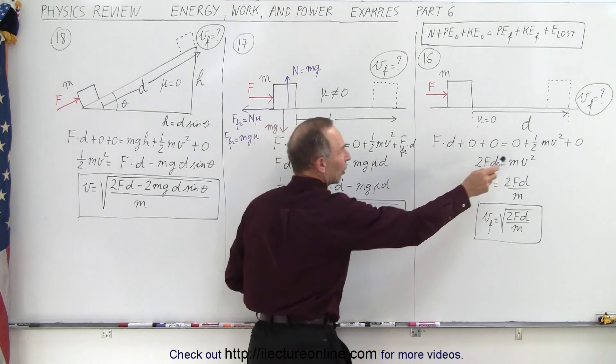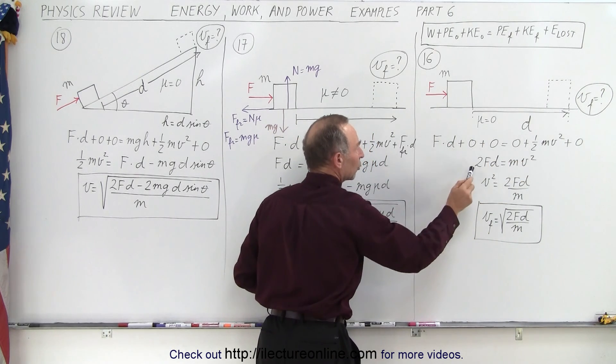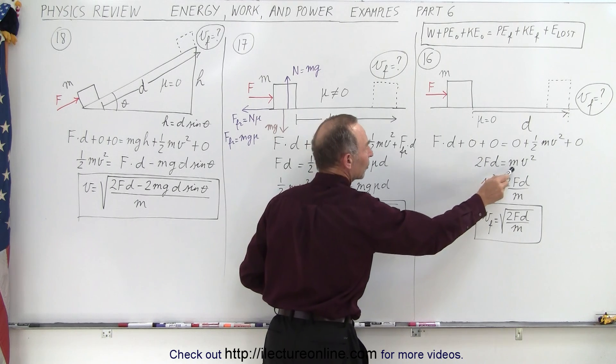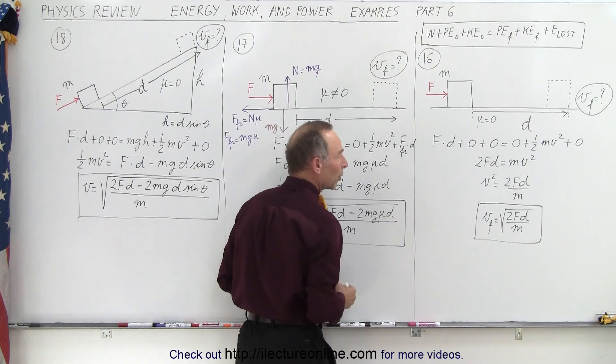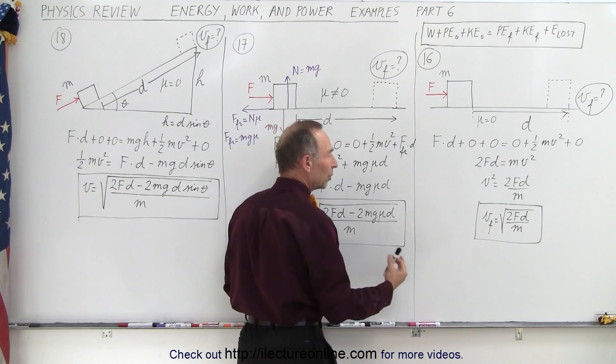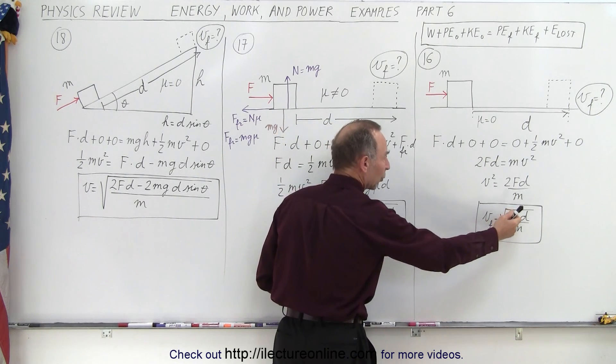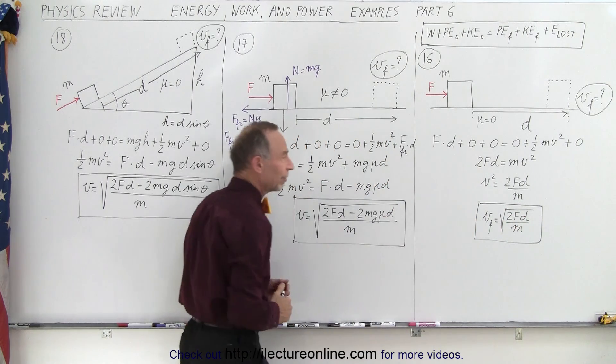And so therefore, when we bring the 2 across over here, 2 times force times distance equals m times v squared. Solve that for v squared. Take the square root of both sides, and so the final velocity will be equal to the square root of twice the force times the distance traveled divided by the mass.